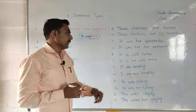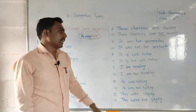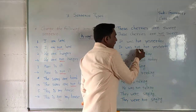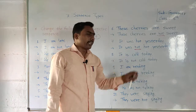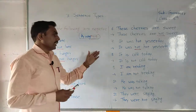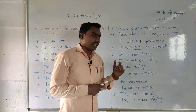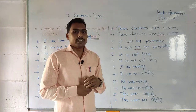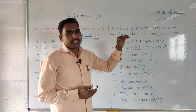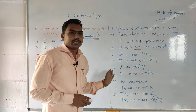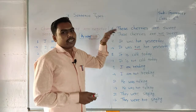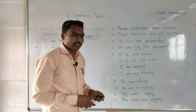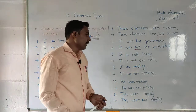Next: 'It was hot yesterday.' It's a positive sentence. The negative sentence is: 'It was not hot yesterday.' To convert, first identify the helping verb and then attach 'not.' This is how you make any positive sentence negative — you simply add 'not' to that sentence.